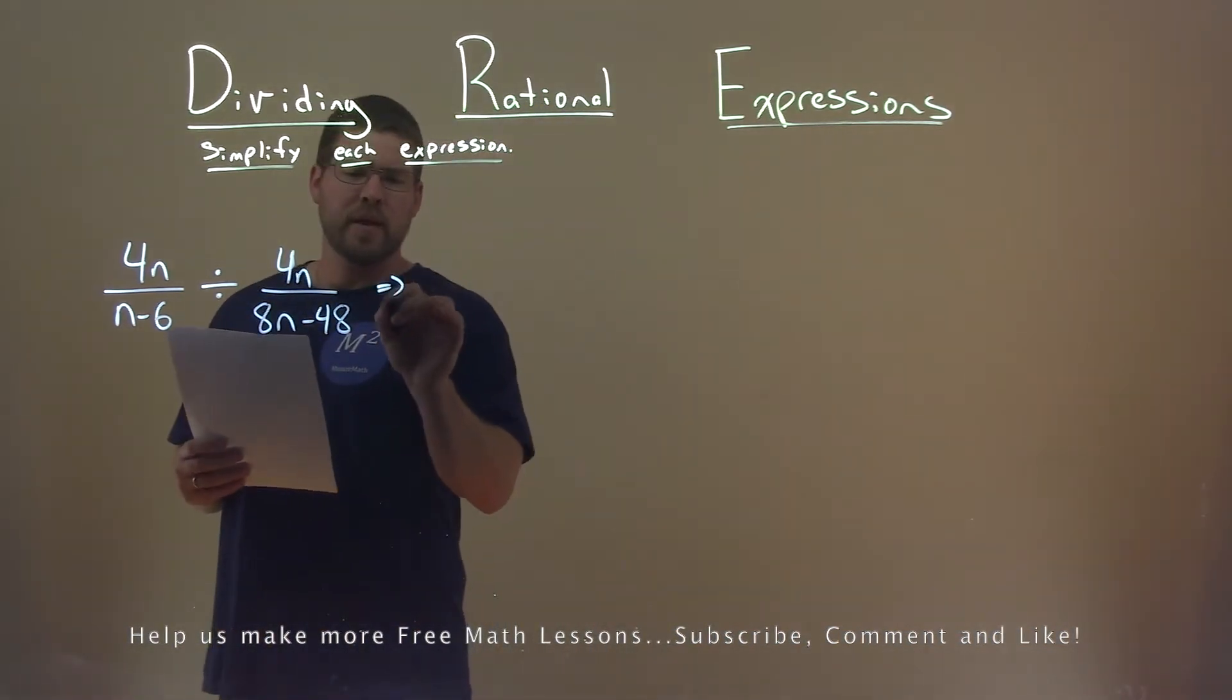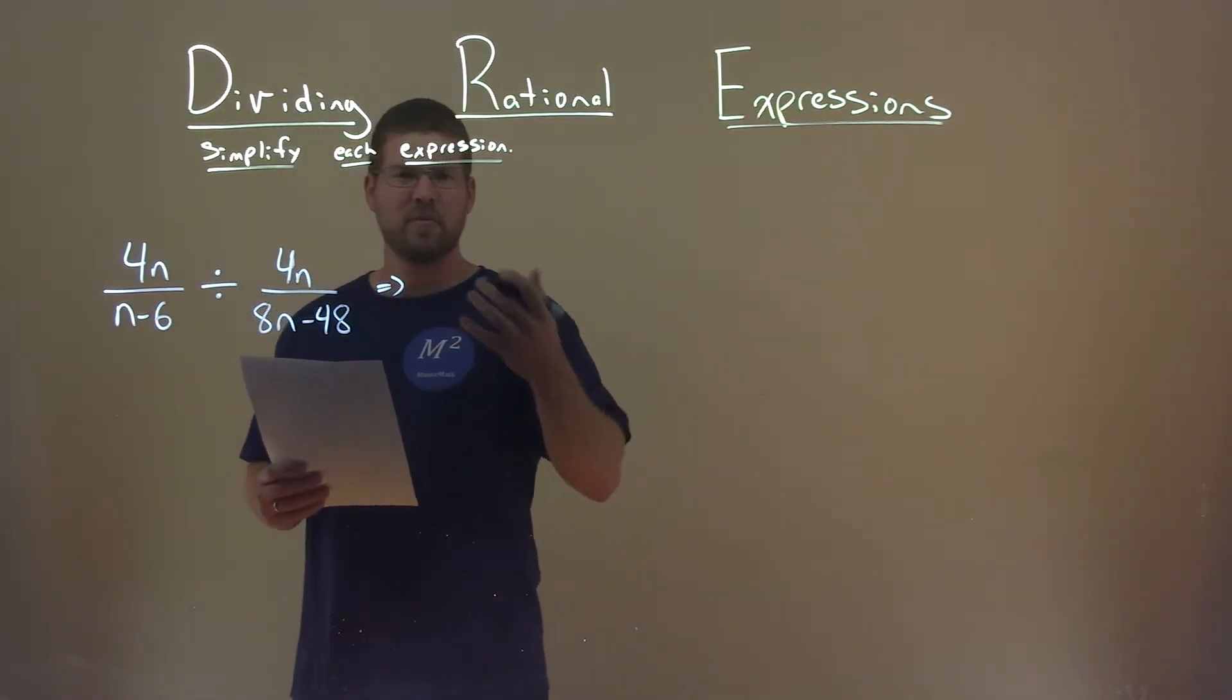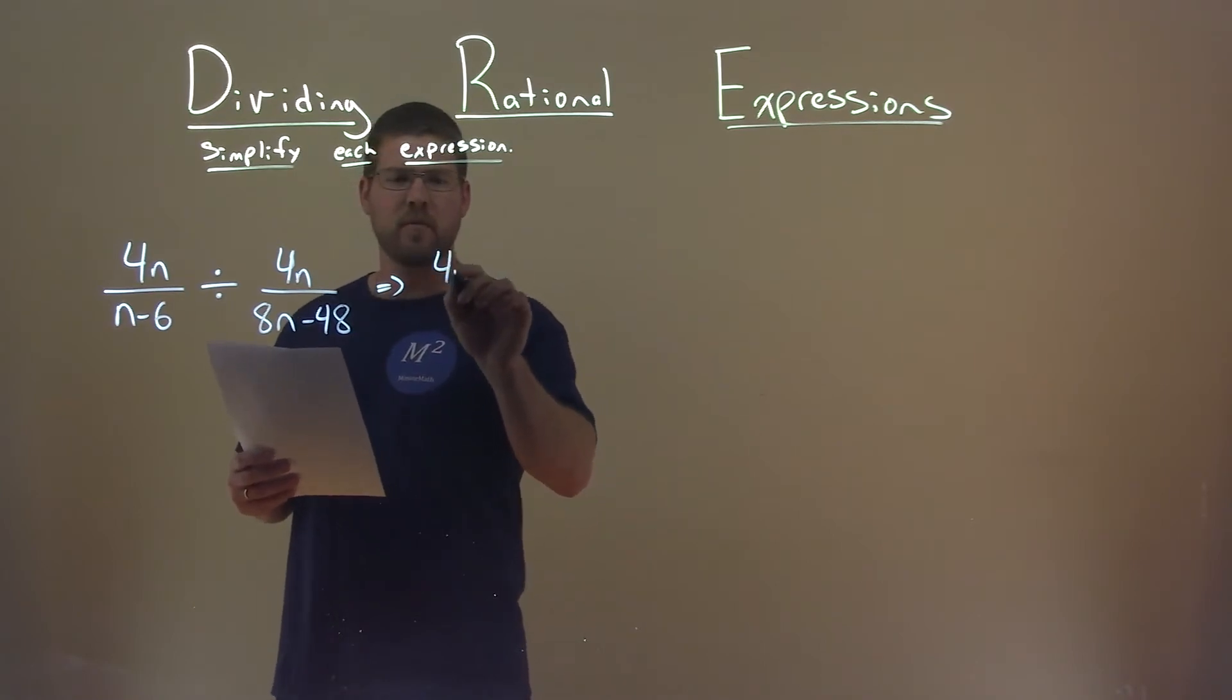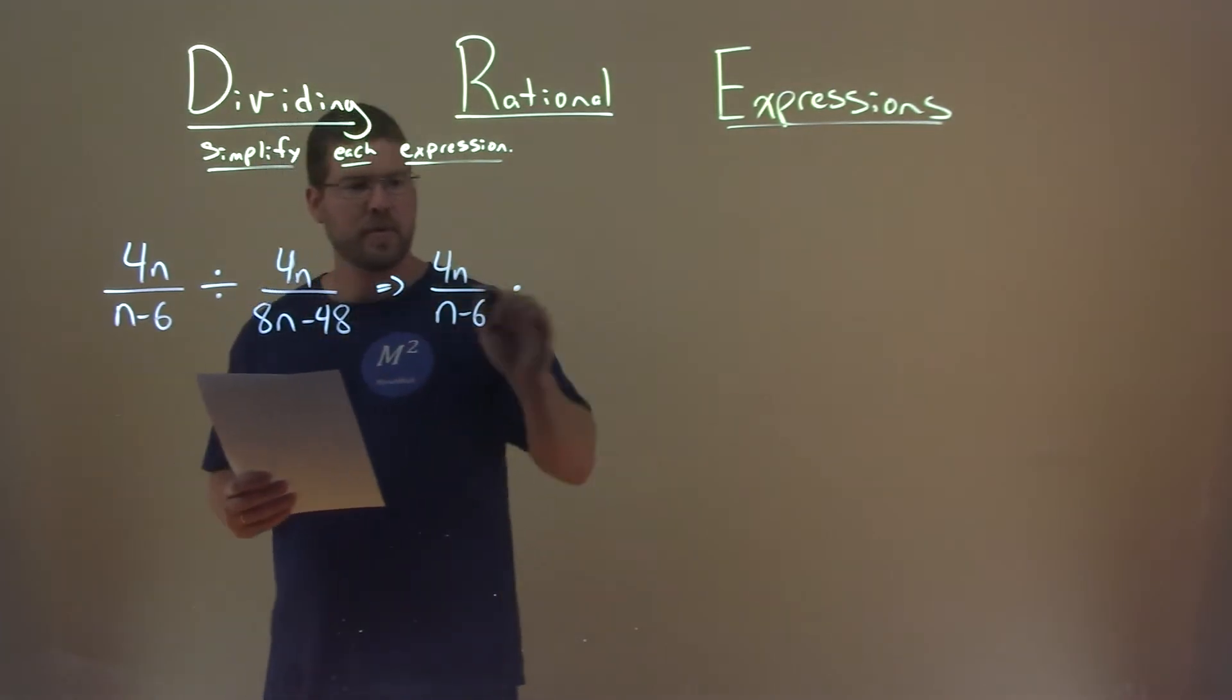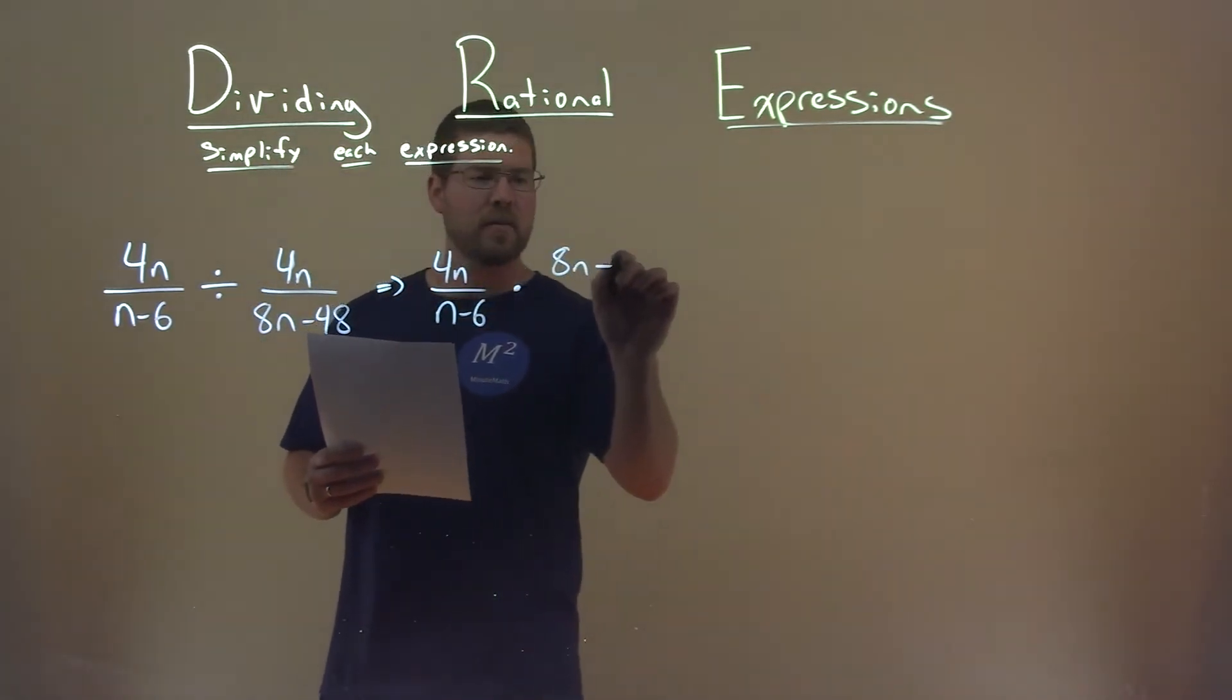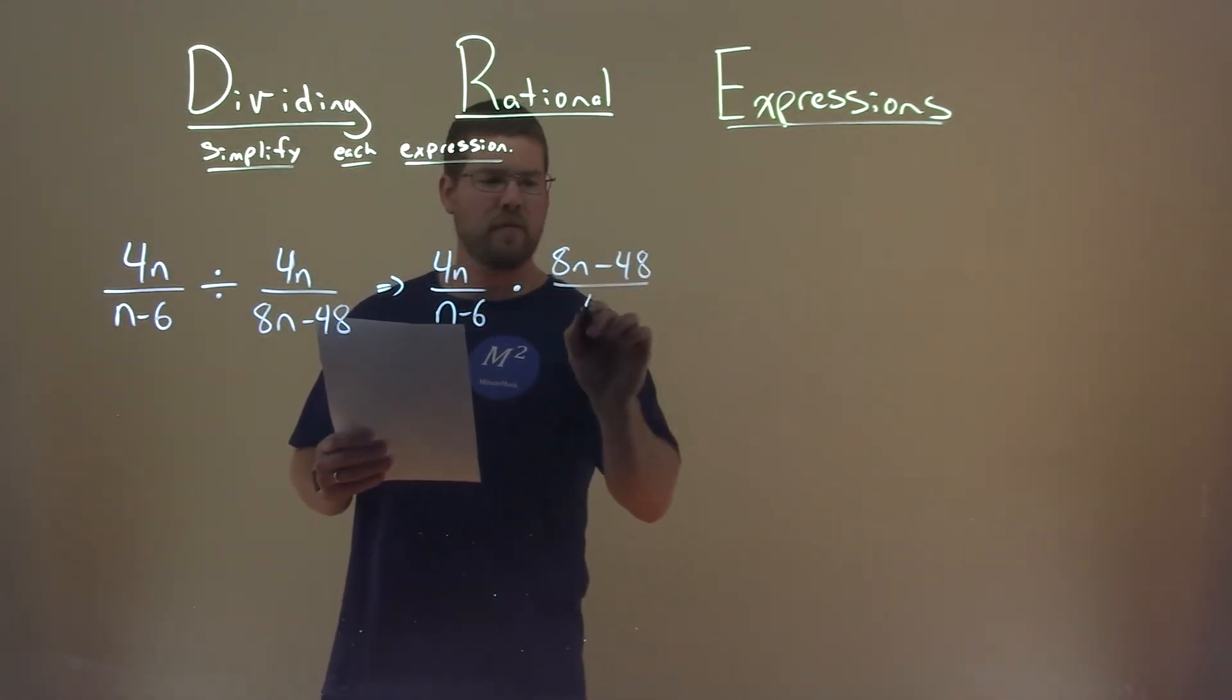Well, a division problem like this is the same as multiplication if we adapt it. So, let's rewrite this, 4n over n minus 6, and we're going to multiply the fraction, but we're going to flip this one. So, we have 8n minus 48 over 4n.